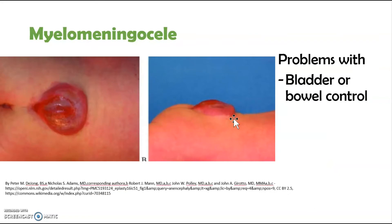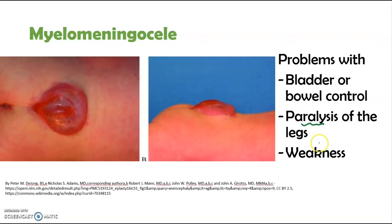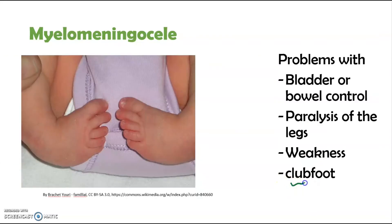The symptoms of myelomeningocele include lack or loss of bladder or bowel control, paralysis of the legs, and feelings of tingling and needles in the legs. You may also see weakness or loss of sensation in the legs and feet below the lesion. Additionally, you may see clubfoot, which means abnormal or twisted legs, just like in the picture.